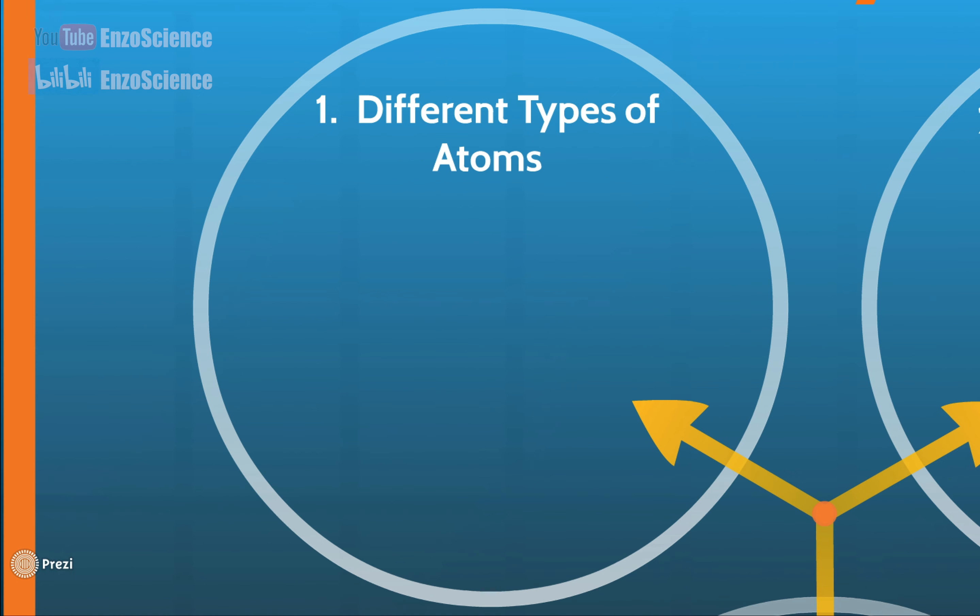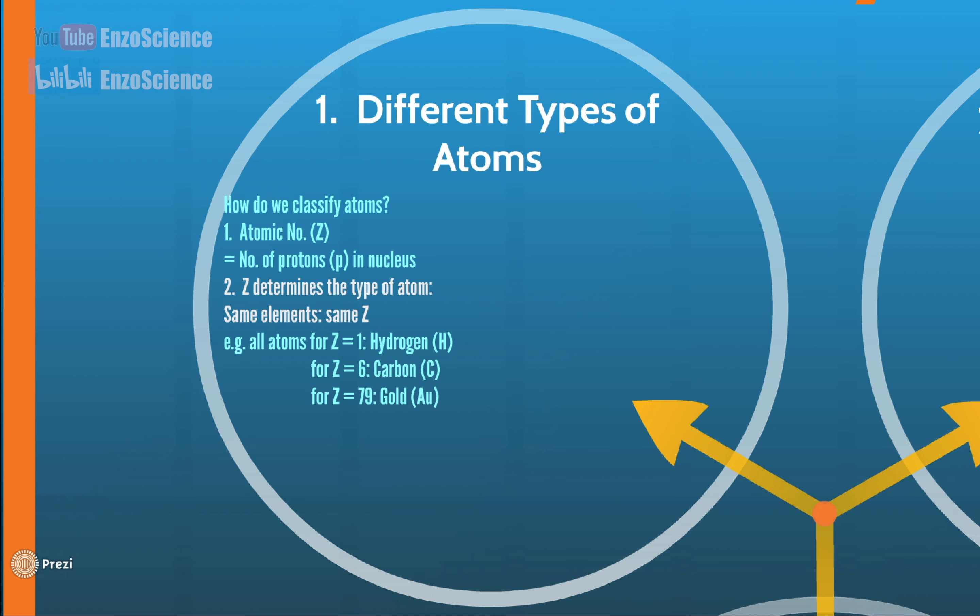The first point is different types of atoms. We know there are various types of atoms, but how do we classify them? We use atomic number, which can be denoted by capital Z. It represents number of protons in nucleus. And more importantly, we use capital Z to distinguish different types of atoms. For the same elements, they certainly will have the same capital Z, which means they have the same number of protons.